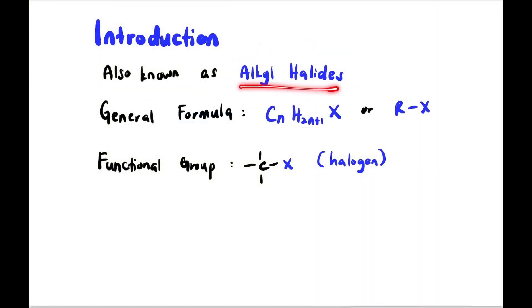Okay, mari kita mulakan. Haloalkanes, also known as alkyl halides, have the general formula CnH2n+1X or simply R-X. The functional group is, of course, halogen.